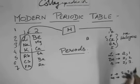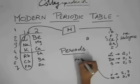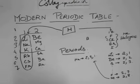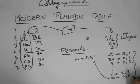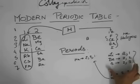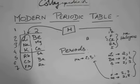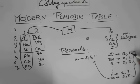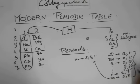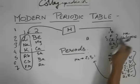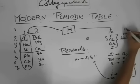After neon, we have sodium which is 2,8,1. The number of outermost electrons increases by 1 unit along the period: we have 2,1 then 2,2, 2,3, 2,4, 2,5, 2,6, 2,7, then 2,8. Since we cannot have 9 electrons in the outer shell, we get 2,8,1 — a new shell is added as soon as Group 18 (neon) is crossed.